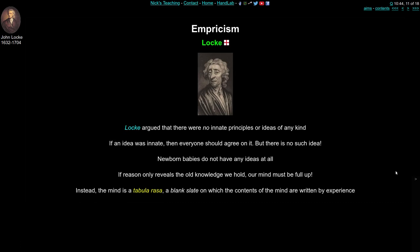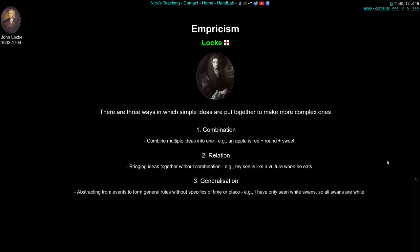He further concluded that if reason alone is only able to reveal knowledge we already hold, then our minds must be completely full when we're born. Instead, he concluded with the famous phrase that the mind is like a tabula rasa — a blank slate on which the contents of the mind are written by new sensory experience. Locke's idea was that you can generate more complicated ideas by combining, relating, and generalising simple ideas. So an apple is red, round, and sweet — all these individual sensory qualities combine to make the complex idea of an apple.